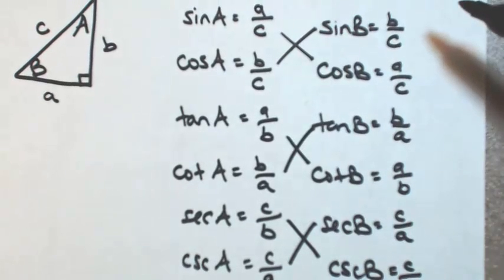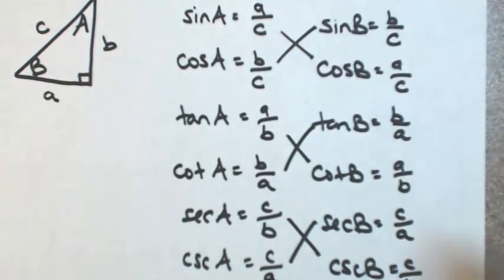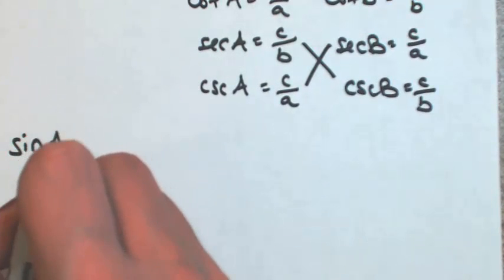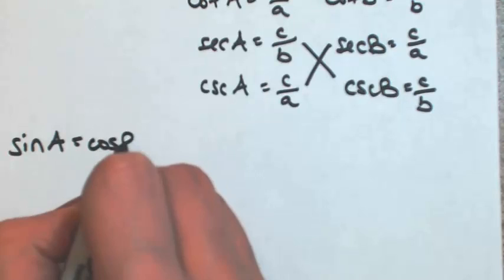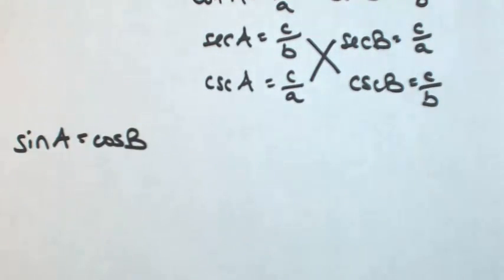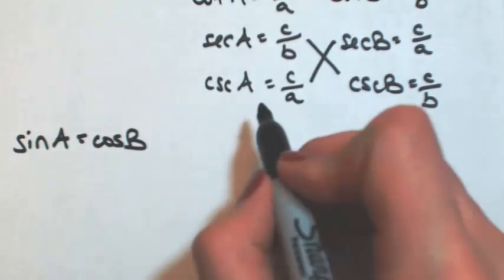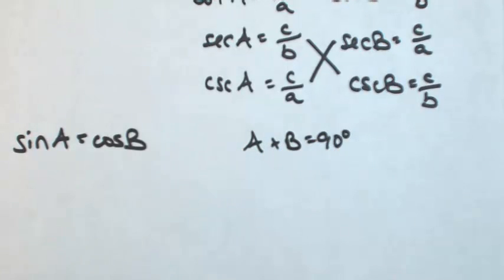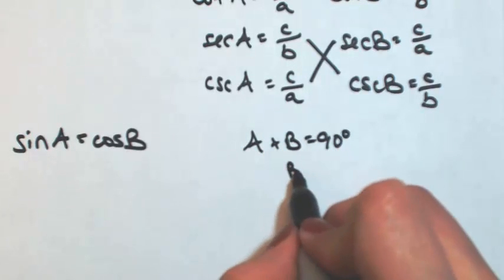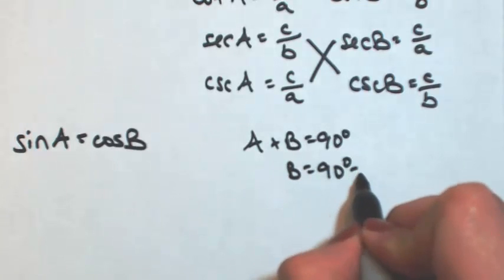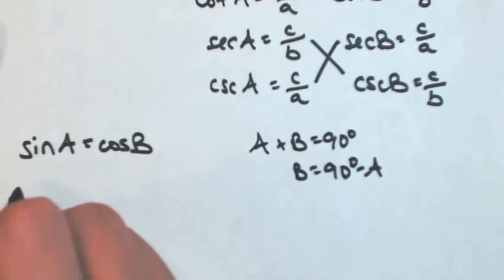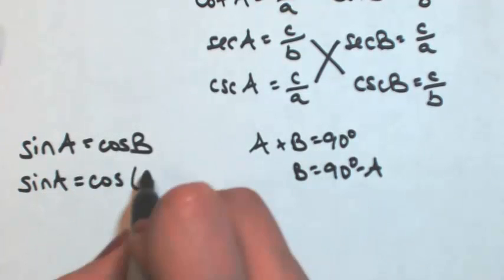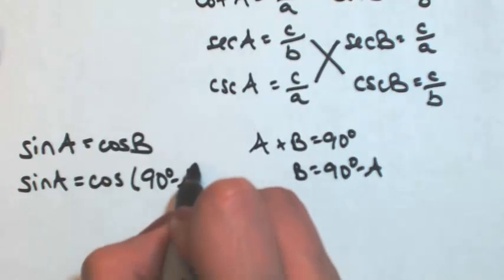Okay, so let's summarize what's happening here. So sine of angle A is equal to cosine of angle B. Remember that A and B were complementary, so that means that A plus B is 90 degrees. So B can be defined as 90 degrees minus A. So that means that sine of angle A could be written as the cosine of 90 degrees minus A.